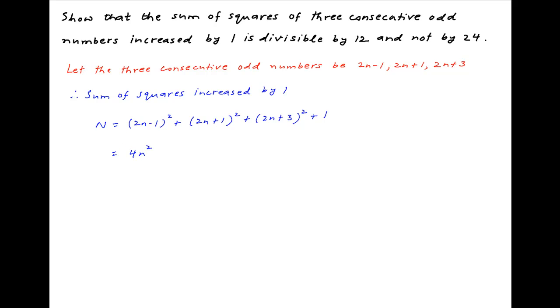This is equal to 4n square minus 4n plus 1 plus 4n square plus 4n plus 1 plus 4n square plus 12n plus 9 plus 1.